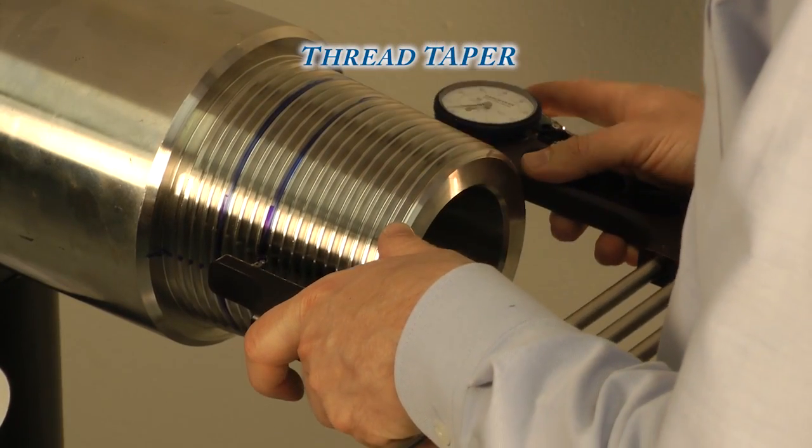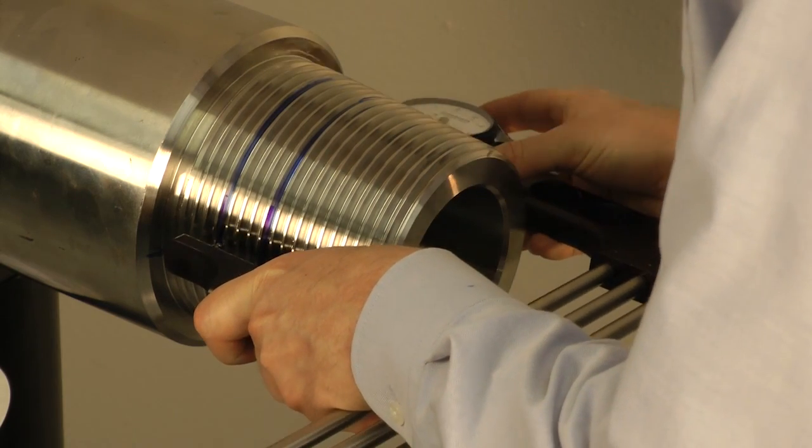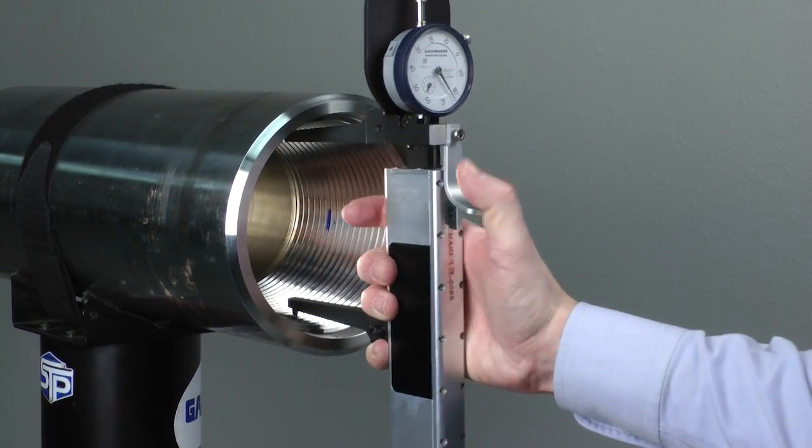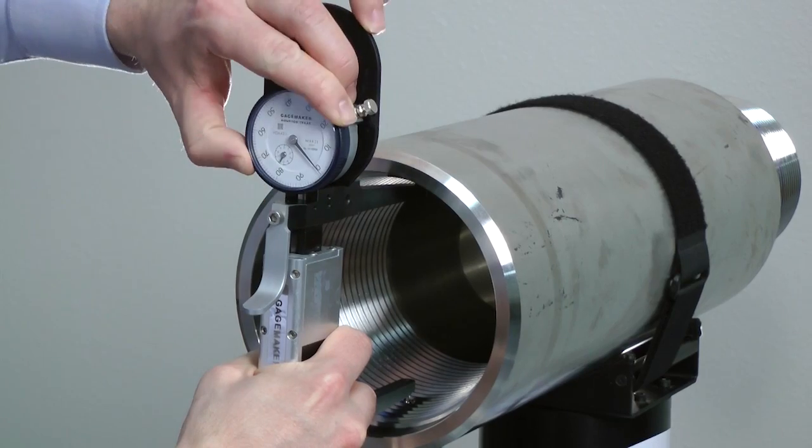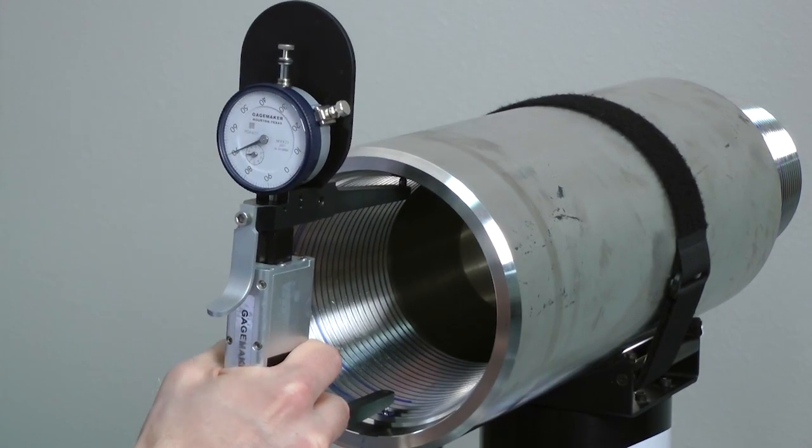Inspecting thread taper is a strongly recommended practice for all tubular industries and is an API requirement in the oil field. High stresses caused by mismatched tapers contribute to connection failure. Lower stress and reduce the risk of failure by properly matching pin-in-box tapers using GaugeMaker's accurate ET and IT gauges.